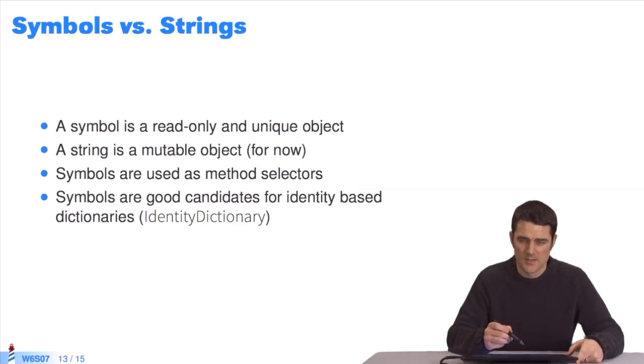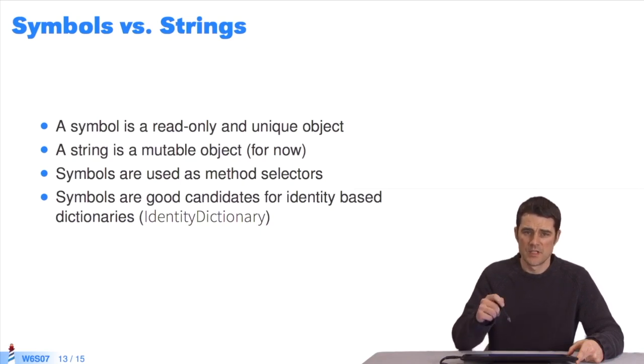A symbol is solely in read-only. Symbols cannot be modified. You must create a new one. It's a unique object, so it always points to the same object. Strings are mutable objects. You can modify their content. It says, for now, because this point is under discussion.